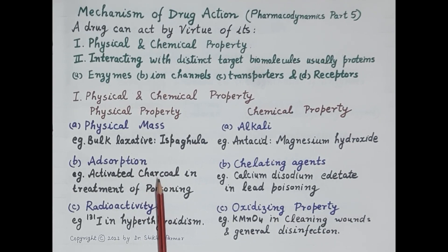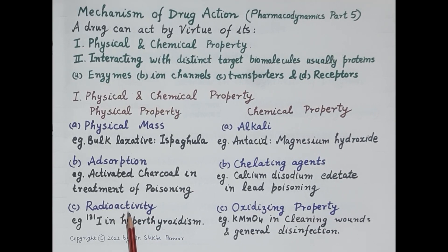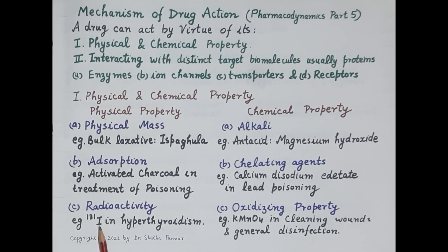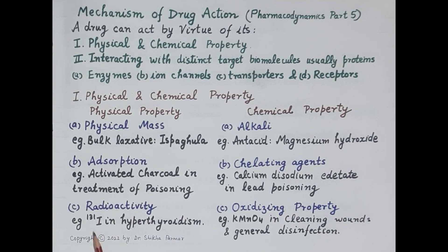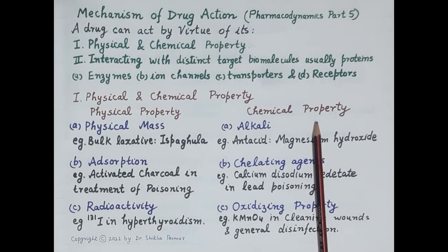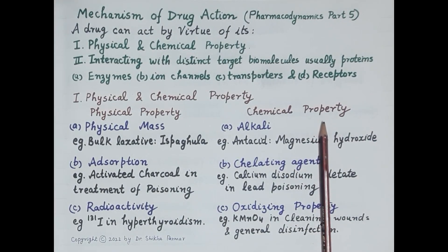Another physical property is adsorption. For example, activated charcoal absorbs toxins in the gastrointestinal tract and is therefore useful in the treatment of poisoning. Another physical property is radioactivity. Radioactive iodine — iodine-131 — when administered, gets concentrated in the cells of the thyroid gland, where it radiates beta rays. These beta rays destroy the thyroid gland, and therefore iodine-131 is useful in the management of hyperthyroidism.